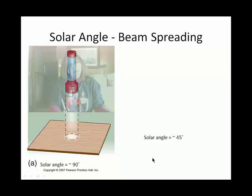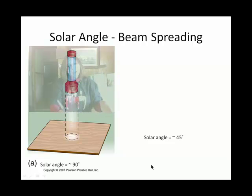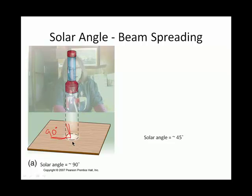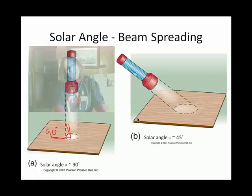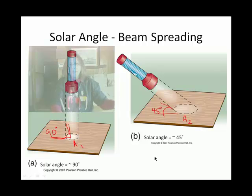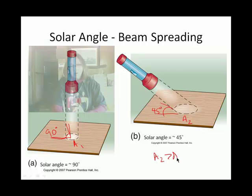It's similar to taking a flashlight: if the beam of light is at 90 degrees relative to what you're shining it on, you can see the area it covers — call that A1. Versus if you slant the light and make it more of a 45-degree angle, this area — A2 — is greater than A1. That's called beam spreading: the same beam, but spread over a larger area because the angle is smaller. So A2 is greater than A1 — beam spreading.